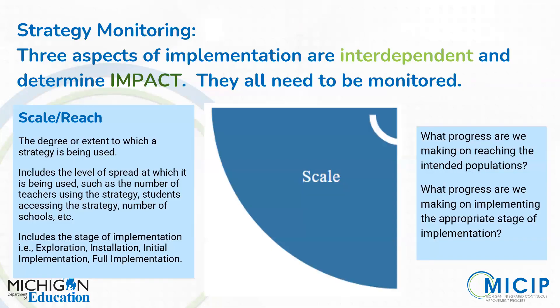The third implementation component is scale. By the definition and the questions on the slides, scale has really two aspects. The first has to do with reaching the intended populations — sometimes called scale and reach — referring to the number of teachers using a strategy, students accessing it, the number of schools, and so on. The second aspect has to do with whether we're implementing the appropriate stage of implementation relative to where we should be, and within that, whether we're implementing the correct activities associated with that stage.